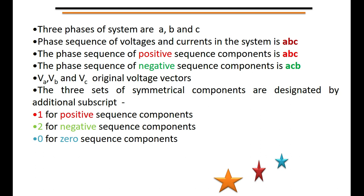We name the 3 unbalanced phasors as phase a, b, and c. The original phase sequence of the system is a, b, c. The positive sequence component has the same phase sequence as the original, that is a, b, c. However, the negative sequence has the opposite phase sequence of a, c, b.